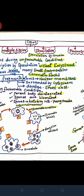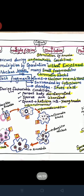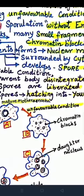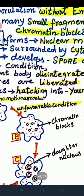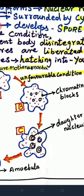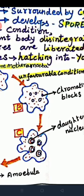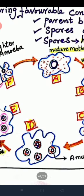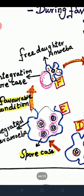In sporulation, encystation does not occur. At the time of unfavorable conditions, the mature parental amoeba nucleus breaks into small pieces called fragments or chromatin blocks. Each fragment or chromatin block forms a nuclear membrane around it and becomes surrounded by cytoplasm, then develops into a spore case.